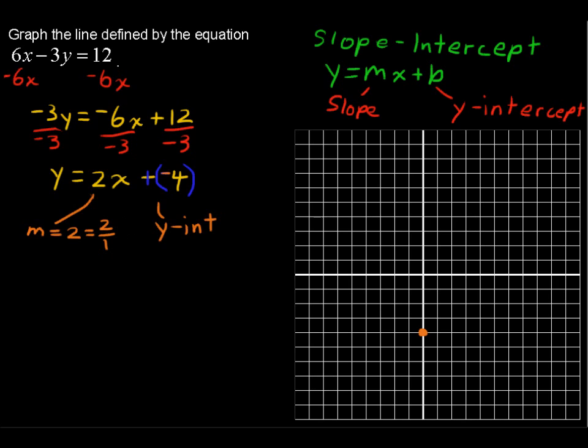Okay, so the rise over the run means from a point on the line, any point, we know one point so far, it's going to go up 2 and to the right 1. So we're going to go up 2 and then to the right 1. And let's put down another point right there.